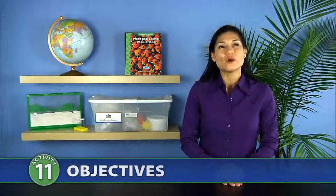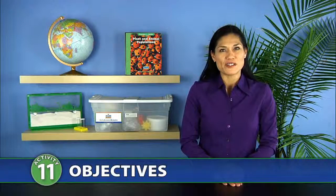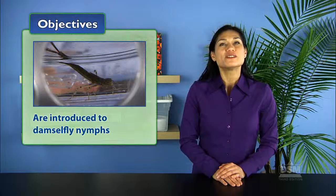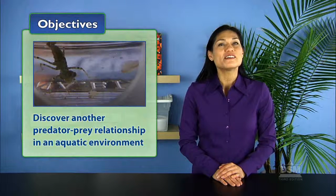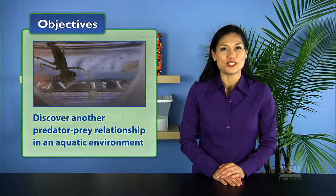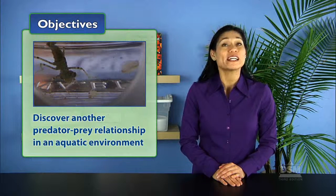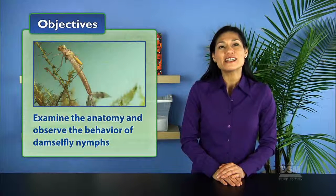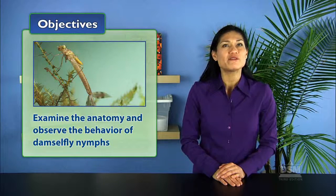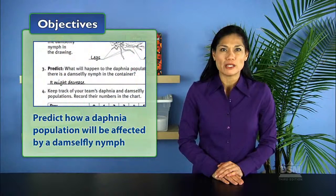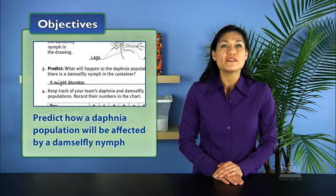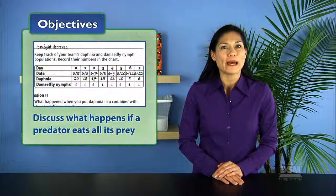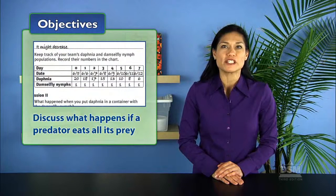In Activity 11, Water Predators, students are introduced to damselfly nymphs and discover another predator-prey relationship, this time in an aquatic environment. They examine the anatomy and observe the behavior of damselfly nymphs. Students then predict how a daphnia population will be affected by a damselfly nymph, and finally discuss what happens if a predator eats all of its prey.